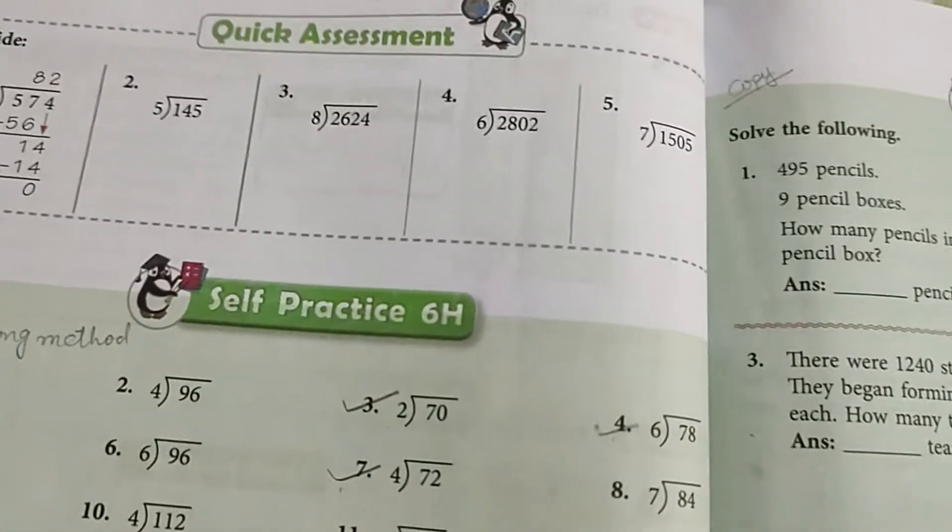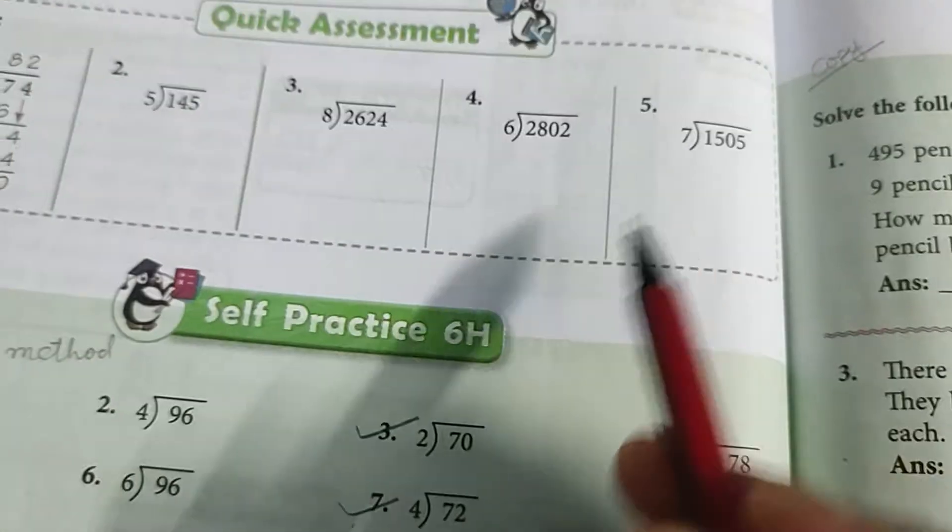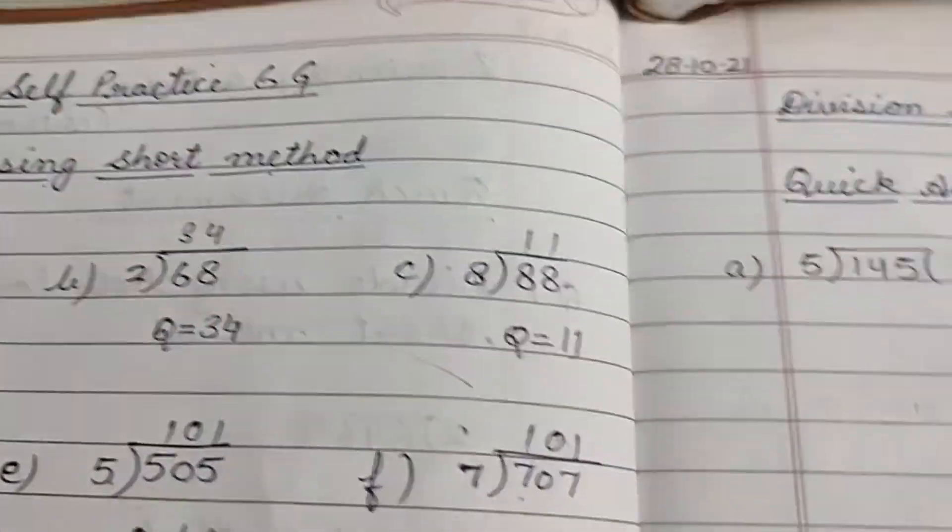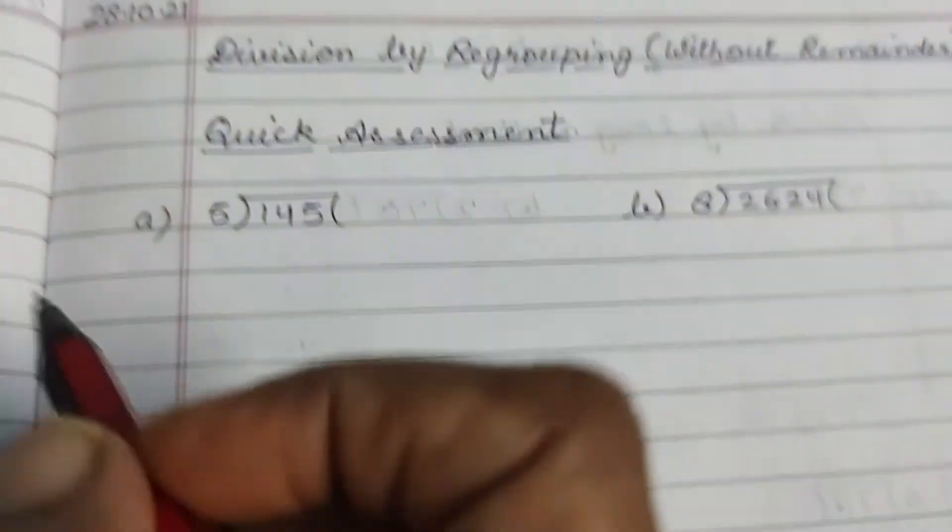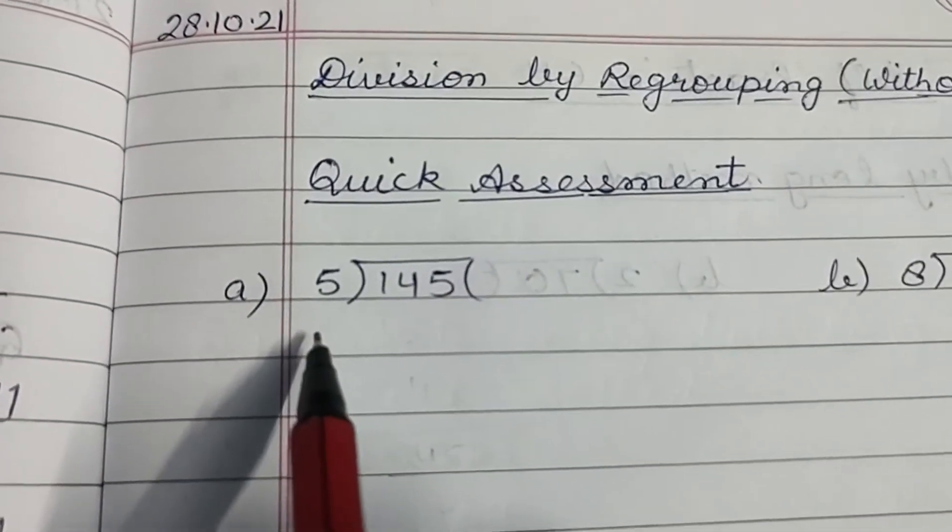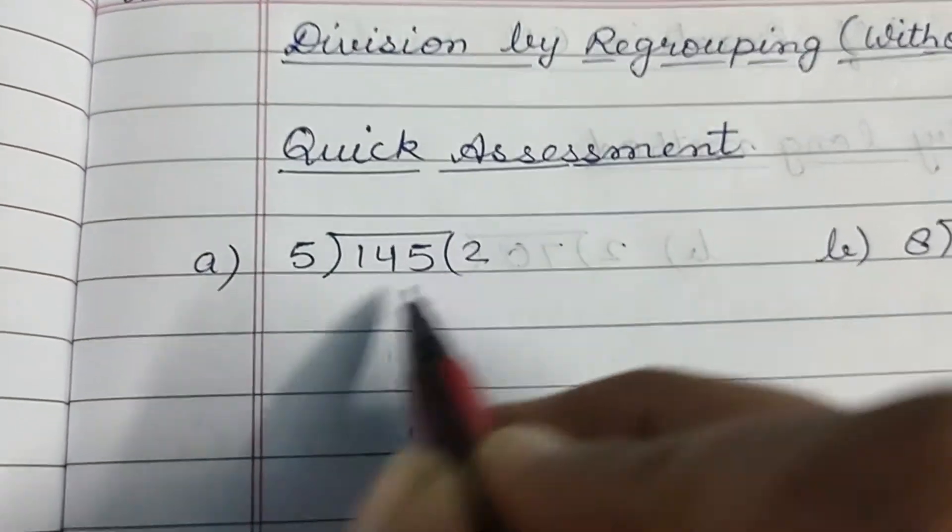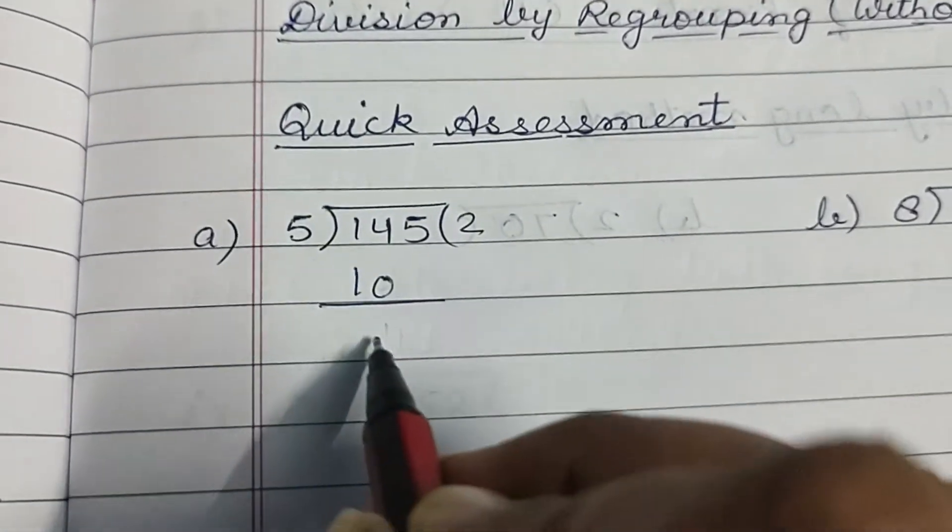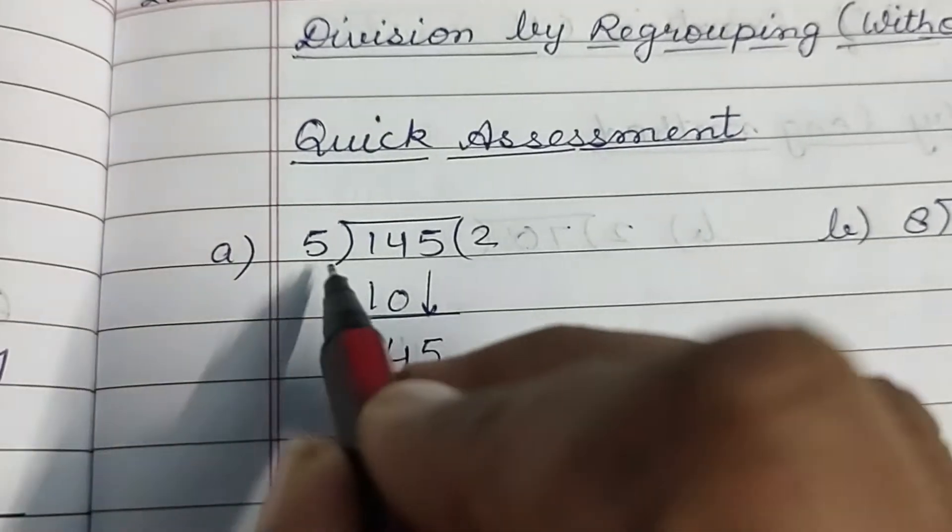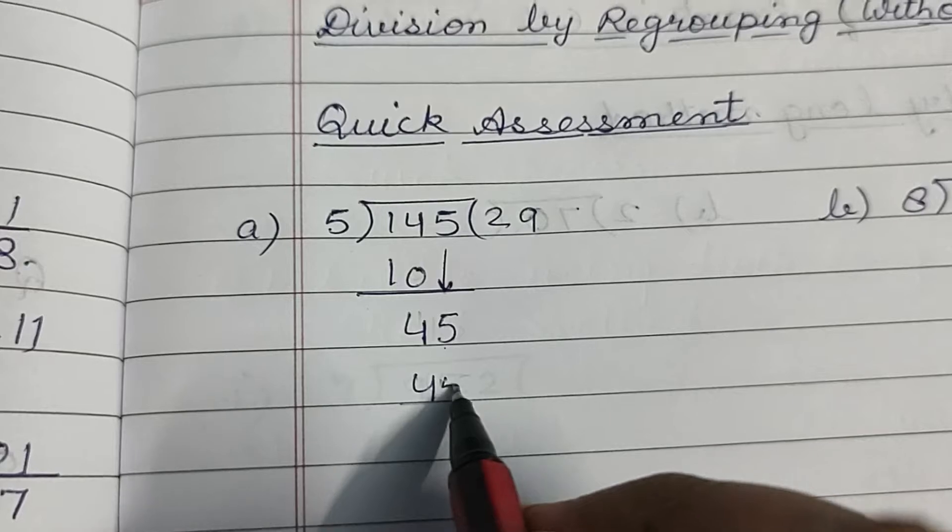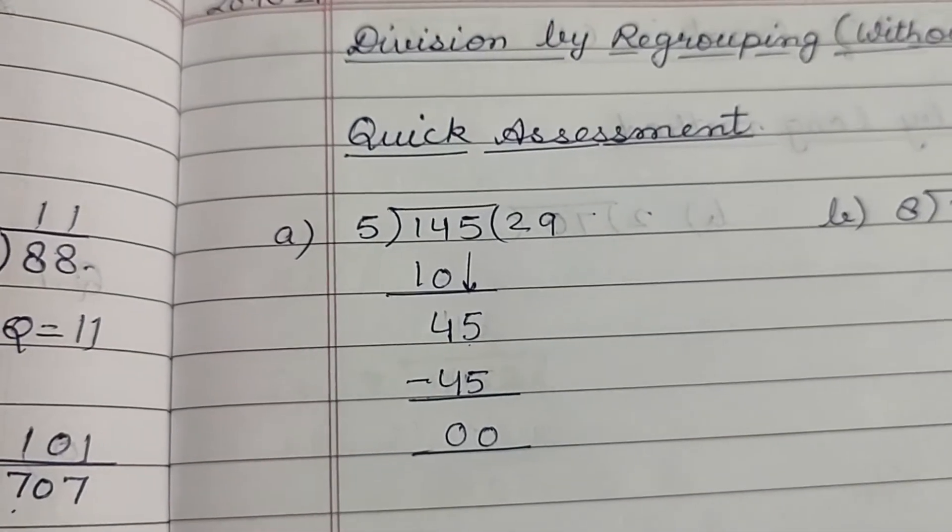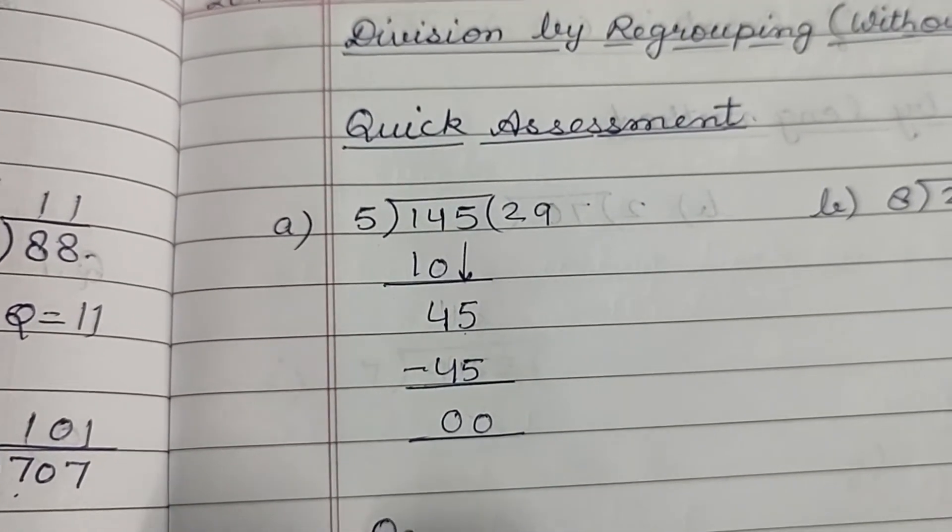So this is the same. Quick Assessment karenge, then Self Practice 6H karenge notebook me. Quick Assessment ka first question book me kiya hua hai already. Second question se hum start karenge. 5×2 is 10. 14 minus 10, 4. Bring down 5, 45. 5×9, 45. 45 minus 45, 0. Quotient is 29.